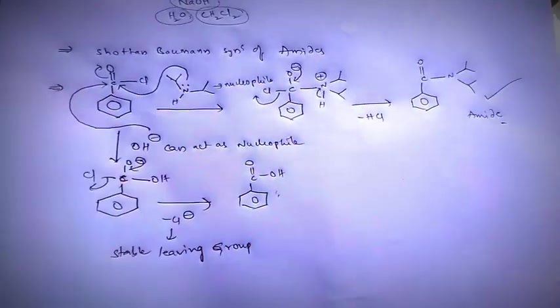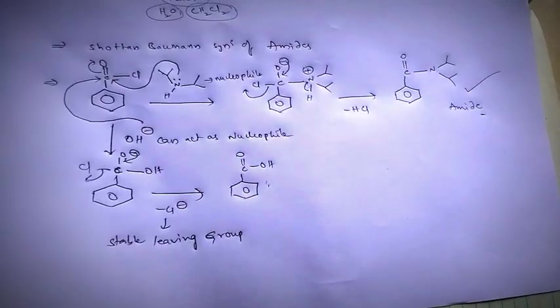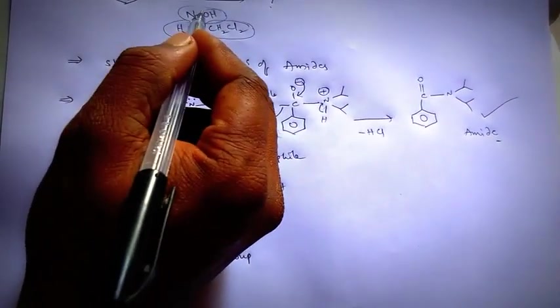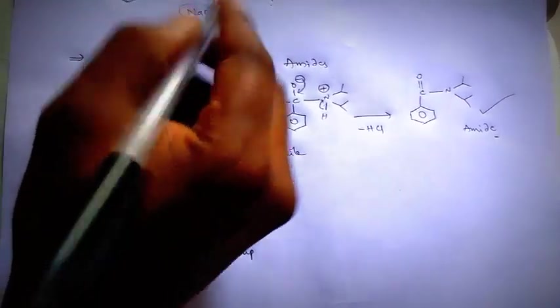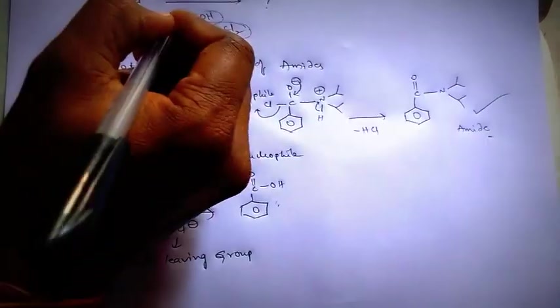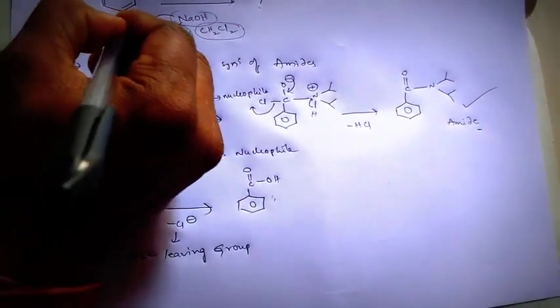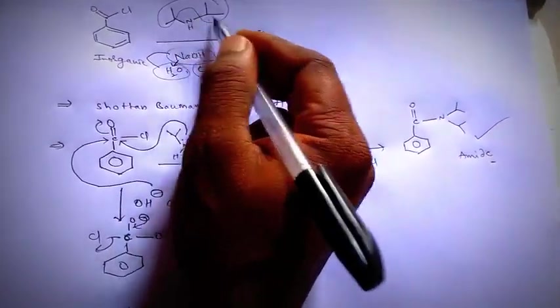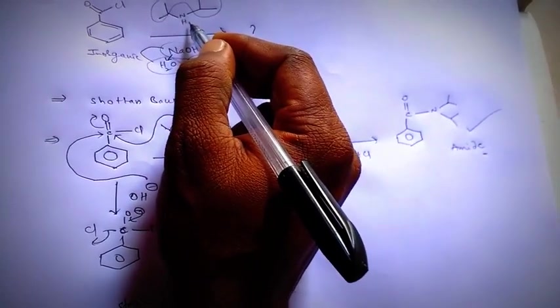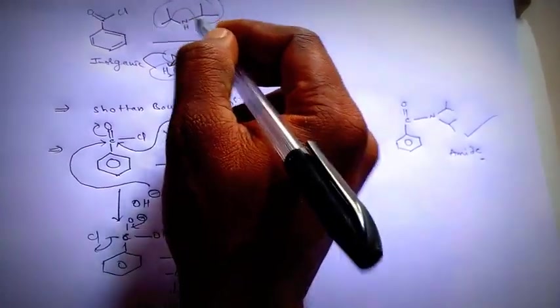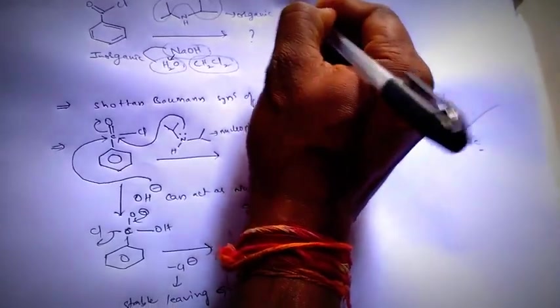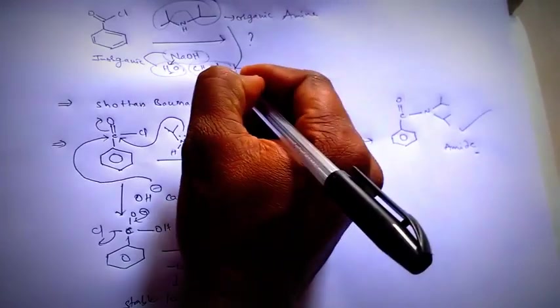So if you observe the reaction conditions here, when you use NaOH, it is inorganic and it dissolves in water. This is diisopropyl amine. It's an organic amine and it dissolves in organic solvent.